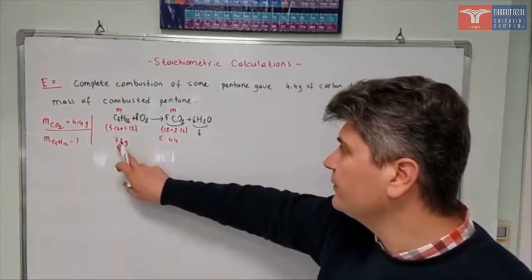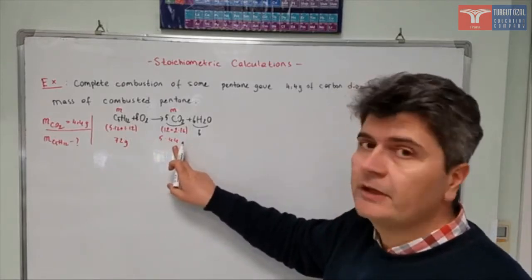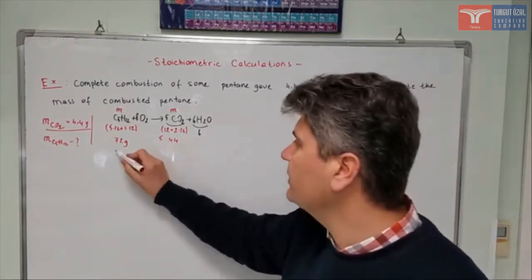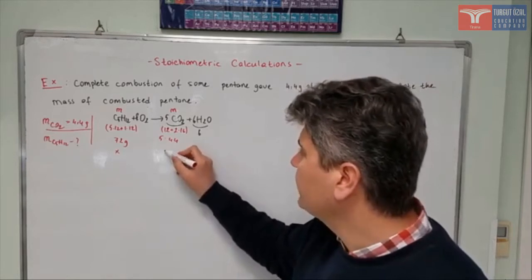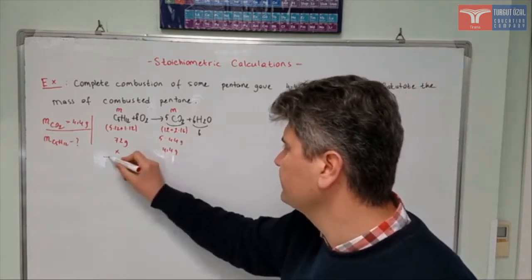72 grams of pentane gives me 5 times 44 grams of carbon dioxide. So how many grams of it will give me 4.4 grams? So, from here,